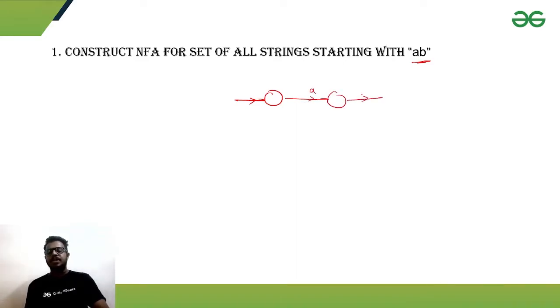Given A, we will go to some state, then given B, we will come to the final state. If starting is ab, after that anything can come. But this is the NFA construction.